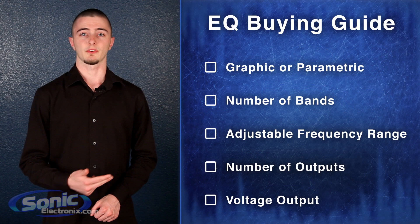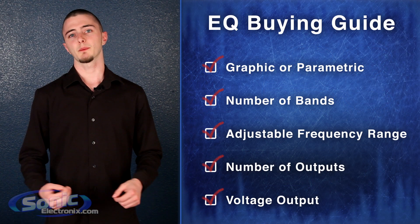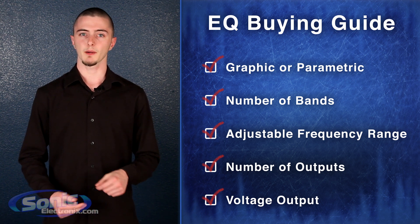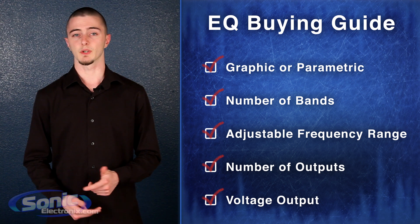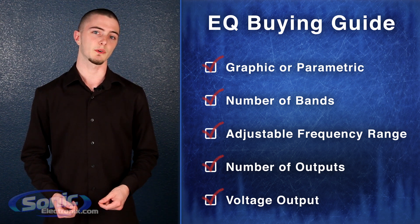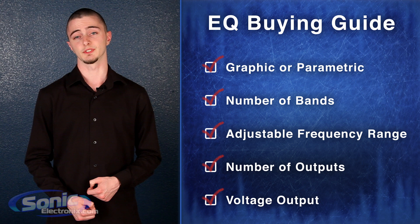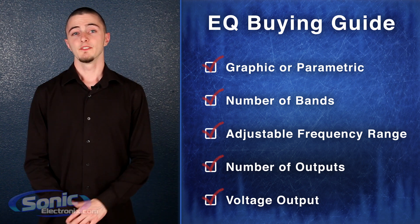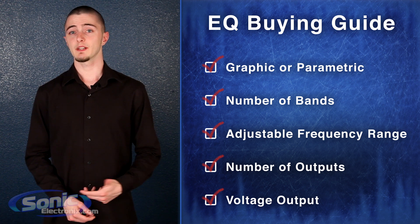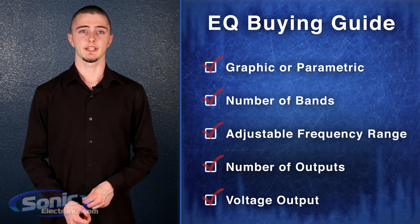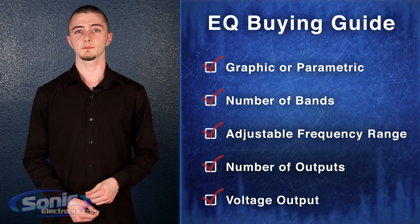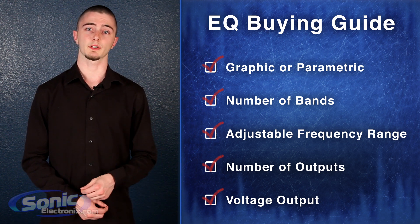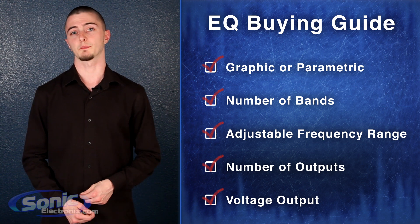When browsing our selection, you want to look for how many bands you can adjust and whether it's a parametric or a graphic EQ. If you really like tweaking your sound, you want to get a parametric EQ with more bands. If you want something quick and easy that will provide you with an overall better sound quality, a basic graphic EQ will suit you just fine. You also want to pay attention to the frequency bands themselves — if you need a boost in your super low bass, you may not want to get an EQ that only adjusts to the 80Hz band. Also look for the number of preamps on the EQ; some have six or more outputs, while some might only have four, which may not work if you have both a speaker and a subwoofer amplifier.